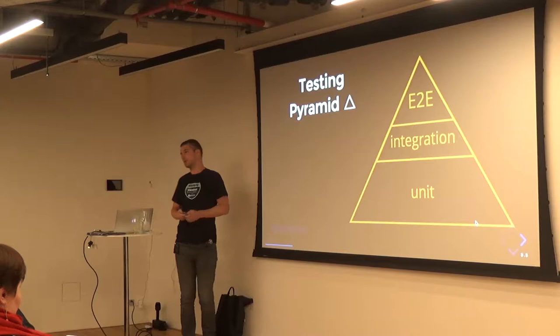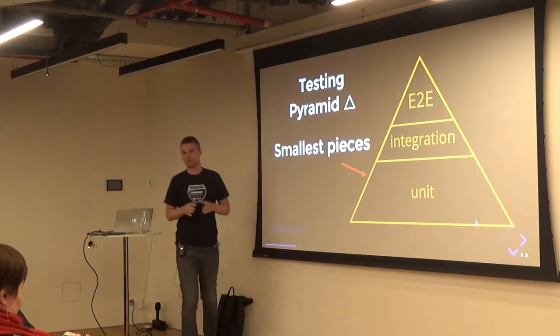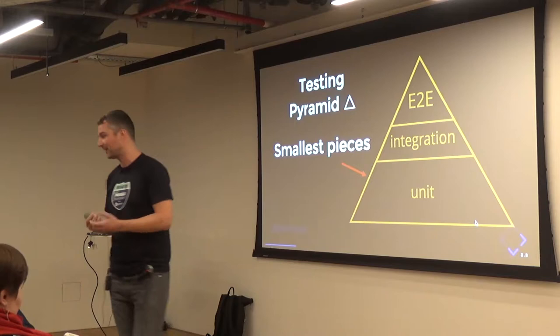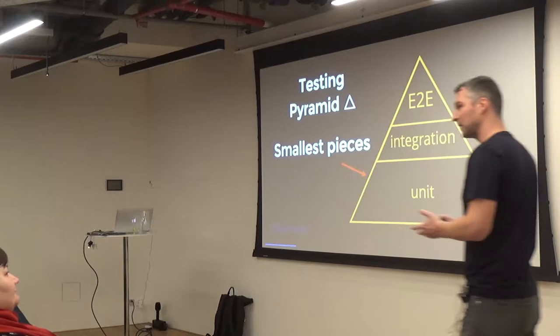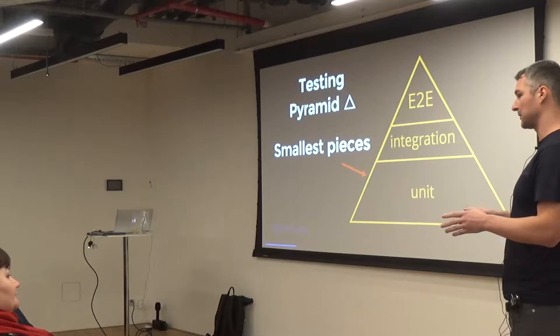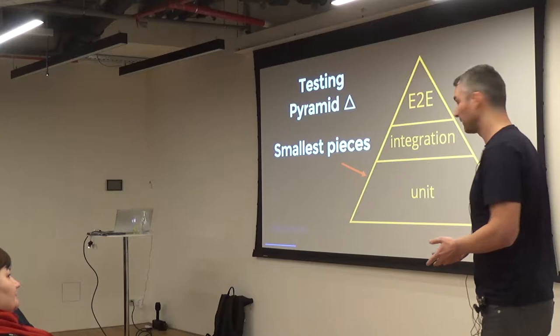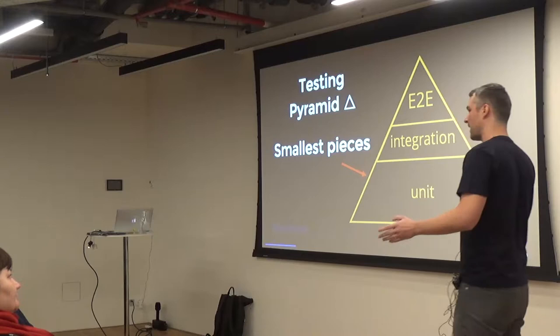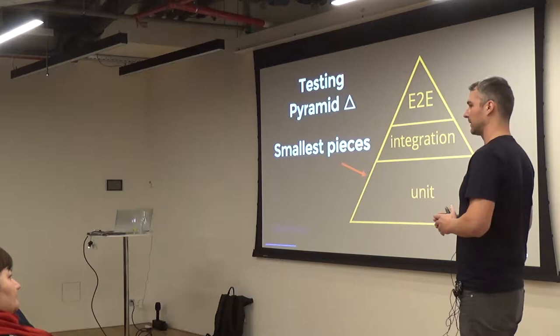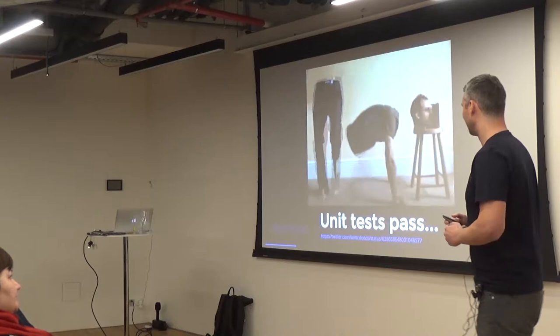Testing pyramid — let's start with geometry. At the bottom we have unit tests, supposed to test the smallest pieces of software. If you write a function that adds two numbers, you load it, call it with a couple of arguments, and compare the result. Two plus two equals four. The good thing about simplicity is we have a lot of good tools in every language that do unit testing very well, and it's easy. That's why the bottom of this pyramid is so wide — we quickly write a lot of tests and cover everything. Our goal is 100% code coverage, all the paths, all the statements.